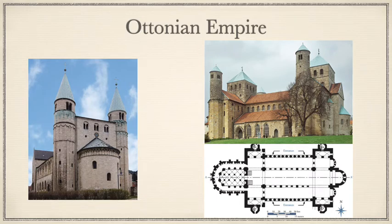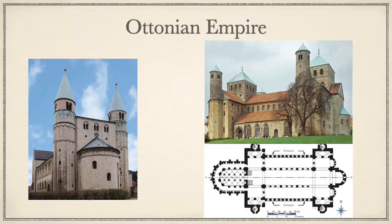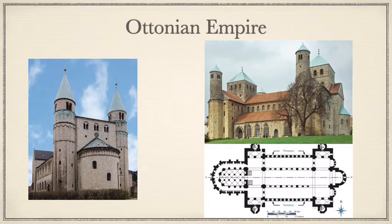Continuing on to the Ottonian Empire: Charlemagne was laid to rest in 814 in the Palatine Chapel at Aachen. Louis the Pious ruled until 840, and when he died, his three sons divided the empire amongst themselves, leading to bloody conflict including Viking invasions, piracy, and internal strife — all helping to cause the collapse of the Carolingians. In the mid-10th century, the eastern part of the empire consolidated under a new Saxon line of German emperors called the Ottonians. In 962 in Rome, the Pope crowned the first Otto as emperor of Rome.